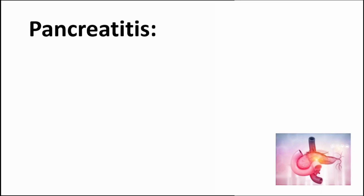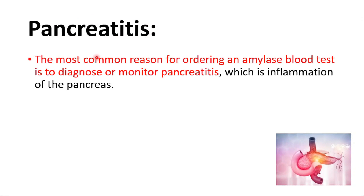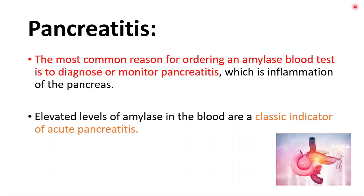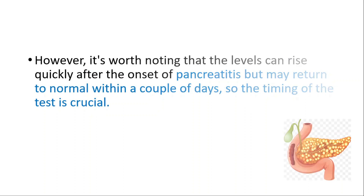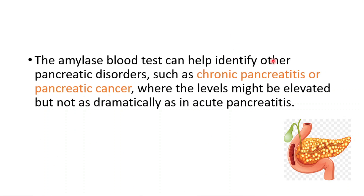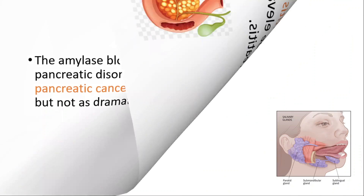The most common use is for pancreatitis — the most common reason for ordering this blood test is to diagnose or monitor pancreatitis, which is inflammation of the pancreas. Elevated levels of amylase in the blood are a classic indicator of acute pancreatitis. However, the levels can rise quickly after the onset of pancreatitis but may return to normal within a couple of days, so the timing of this test is crucial. Amylase can also help identify other pancreatic disorders like chronic pancreatitis or pancreatic cancer, where levels might be elevated but not as dramatically as in acute pancreatitis.